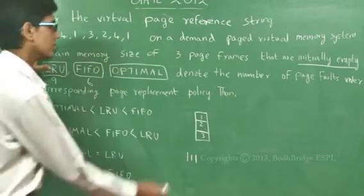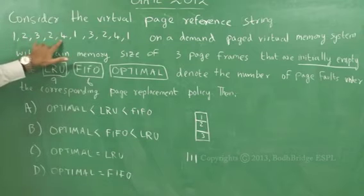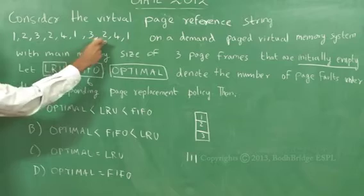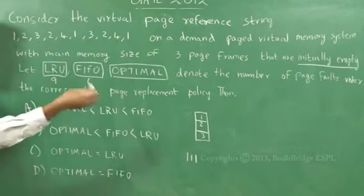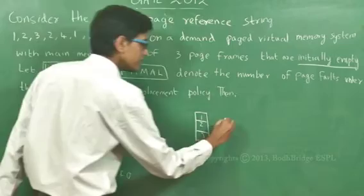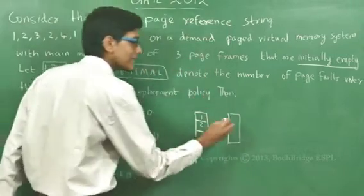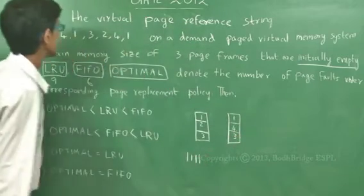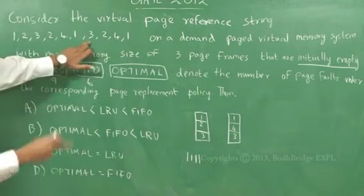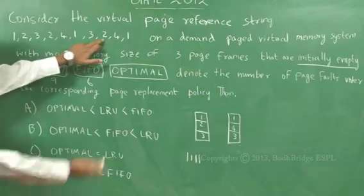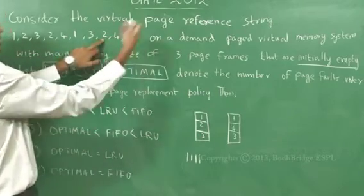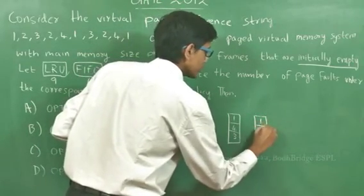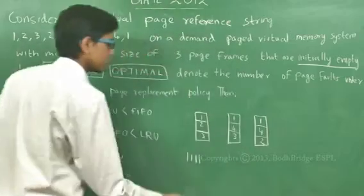Next is 2, which is already there — no page fault. Next is 4. We look ahead: 1 is used, 3 is used, and 2 is used in the future. Out of these, 1 and 3 are used in the near future, so 2 is pushed out and 4 is pushed in, giving frames 1, 4, 3 — a page fault. 1 is already there, 3 is already there. Now we need 2: looking ahead, 1 and 4 are used in the future but 3 is not, so 3 is popped out and 2 is pushed in, giving frames 1, 4, 2 — another page fault.